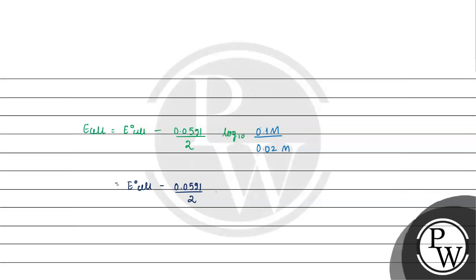So E naught cell minus 0.0591 by 2, log with the base 10, 0.1 by 0.02.